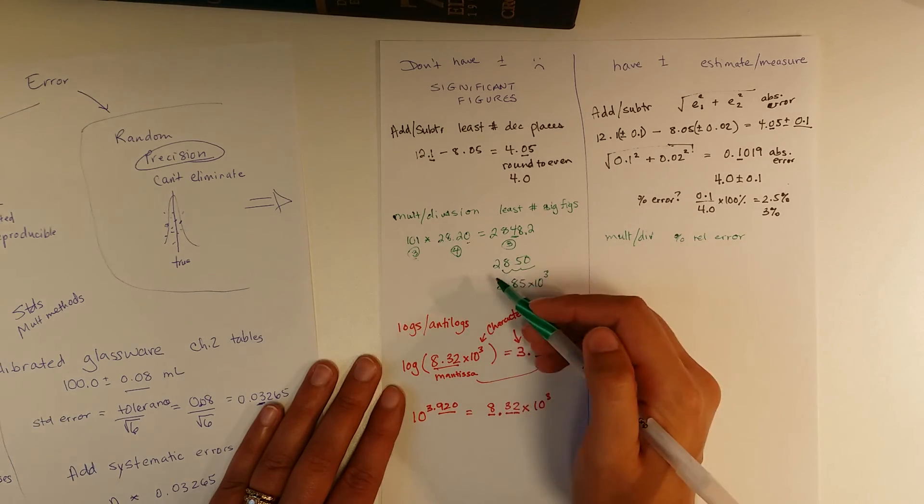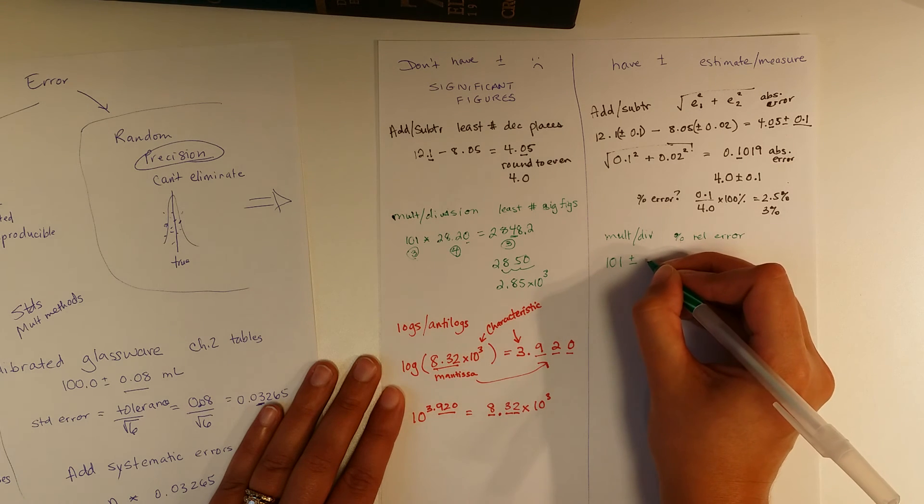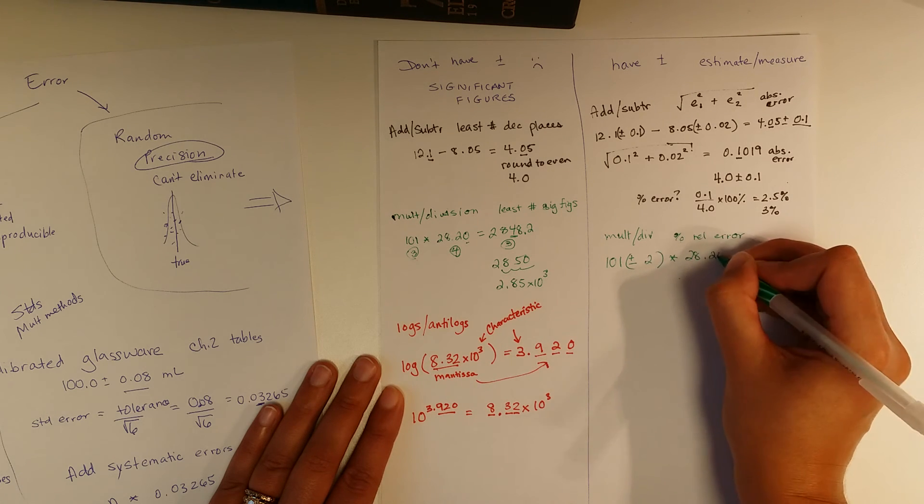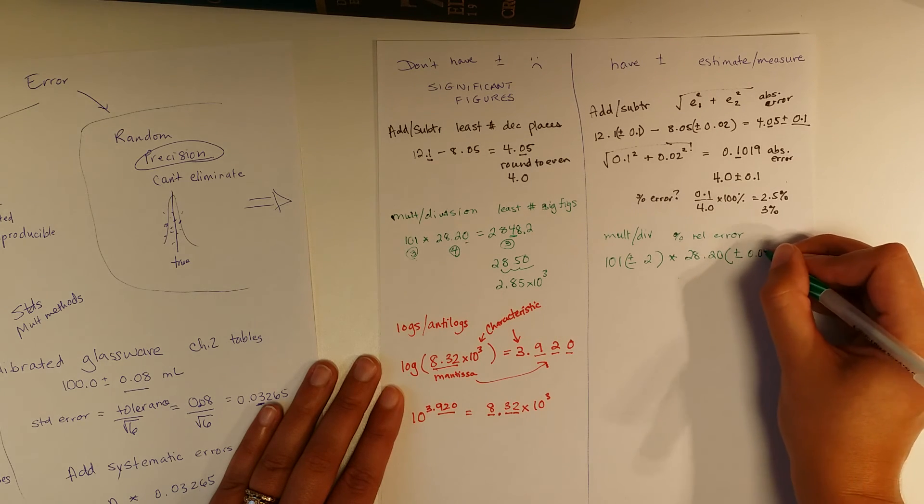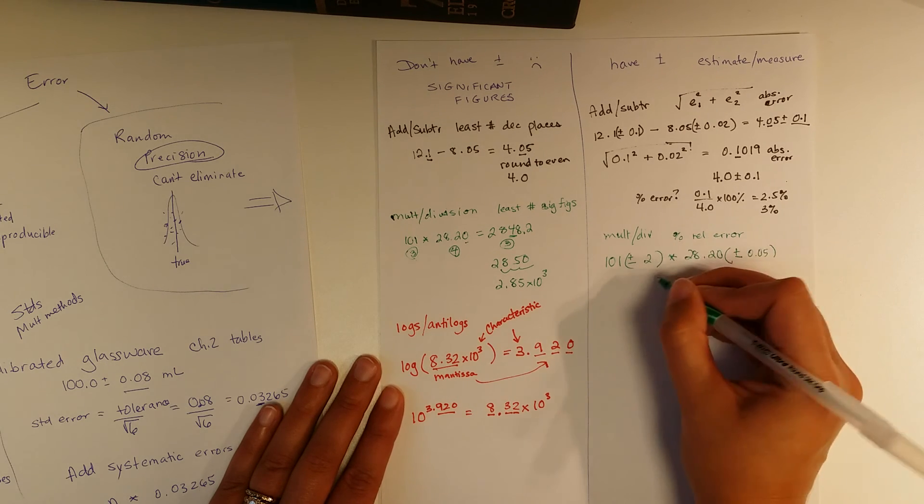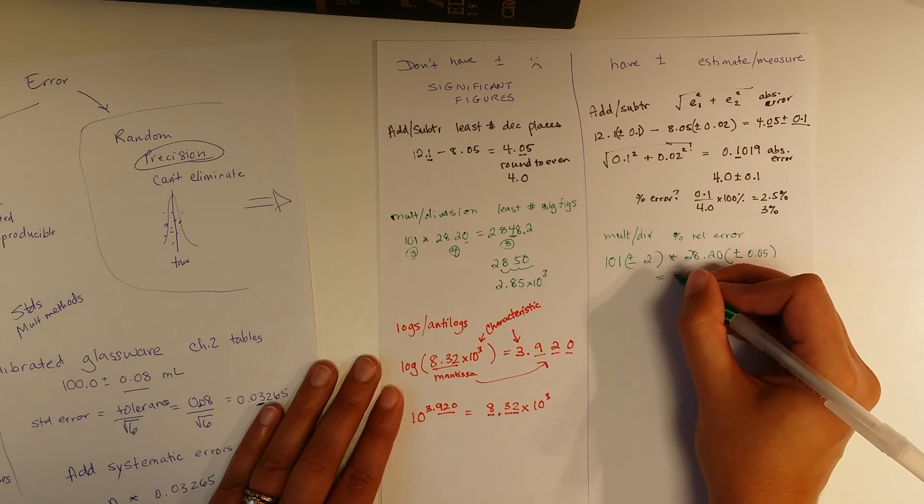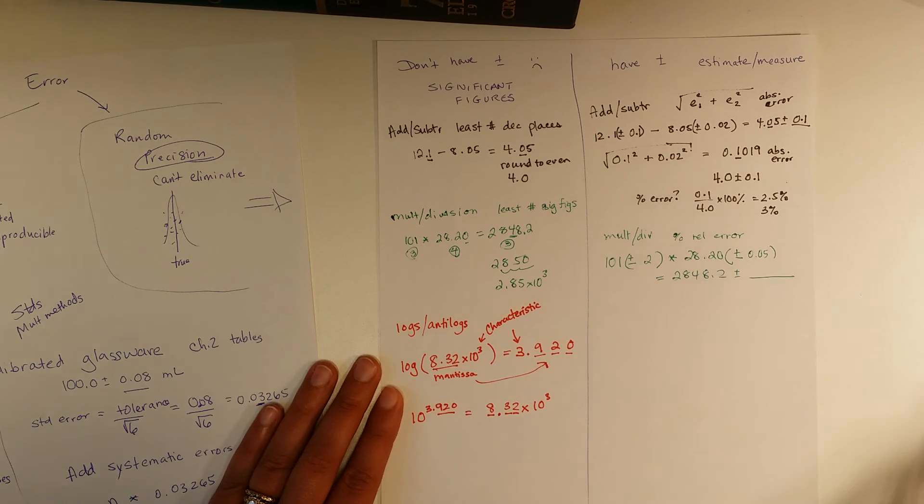So I take the same math I did here, and I put some error to it. Let's say we've got 101 plus or minus 2. That seems reasonable. And then we're multiplying that by 28.20. Now we figured out that that is accurate to this decimal place. So I don't know. What shall we do? Plus or minus 0.05 seems pretty reasonable. And I know that if I put it into my calculator 101 times 28.2, I got out that 2848.2. And then I need to know what is the plus or minus on that.